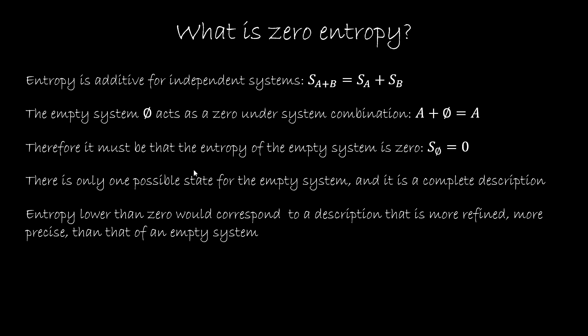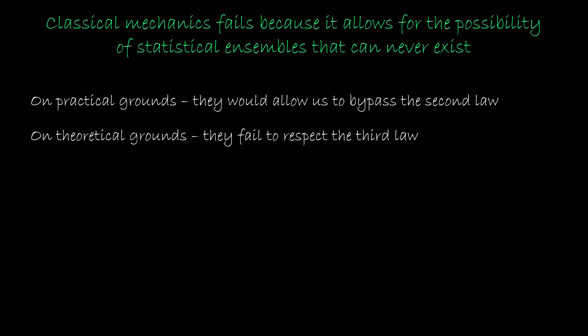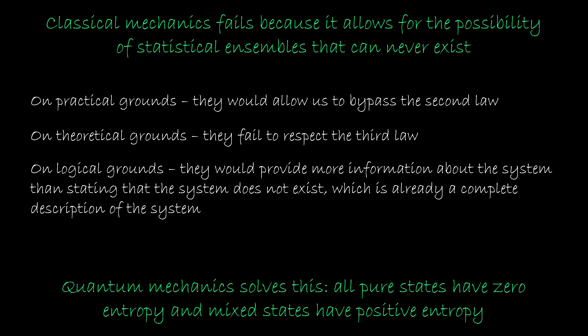I give you a state whose description is more precise than if I told you that the system wasn't there. But we just said that if I tell you the system is not there, I fully describe the system. And that makes no sense. So from an information theory perspective, no system can have entropy lower than zero. It's logically inconsistent. So classical mechanics fails because it allows for the possibility of statistical ensembles that can never exist, those with minus infinite entropy. Now, as a side note, quantum mechanics fixes this. In quantum mechanics, all pure states have zero entropy, including the vacuum.